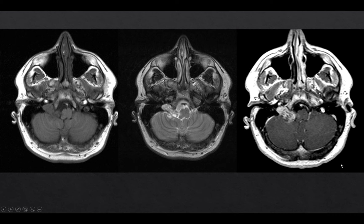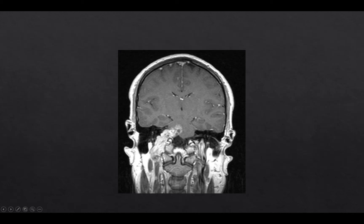The mass has a few non-enhancing sites which are hyperintense on T2. The mass displaces the medulla to the left, and the growth pattern is best seen on the coronal image. There is a superomedial growth pattern coursing along the expected location of cranial nerves 9, 10, and 11. This is most consistent with a nerve sheath tumor such as a schwannoma — and this indeed is a schwannoma.